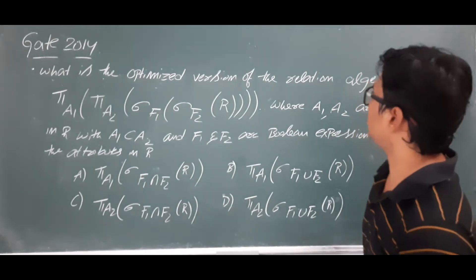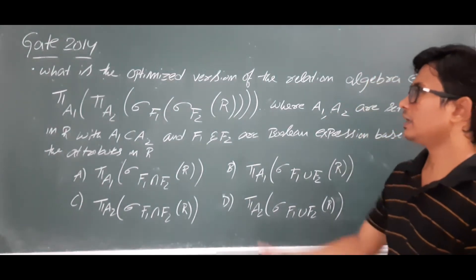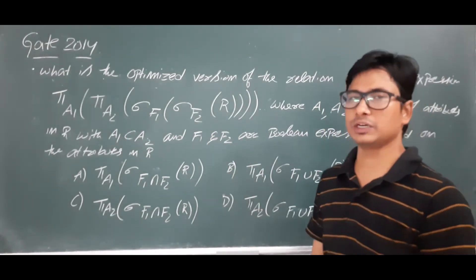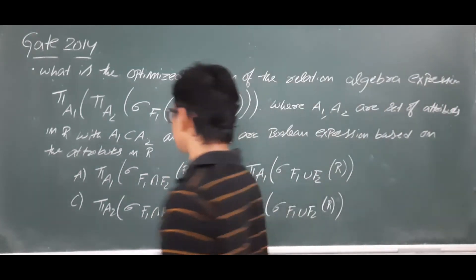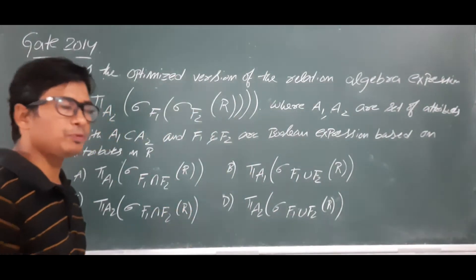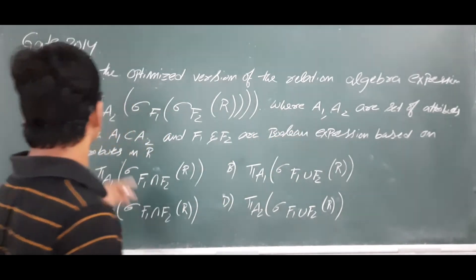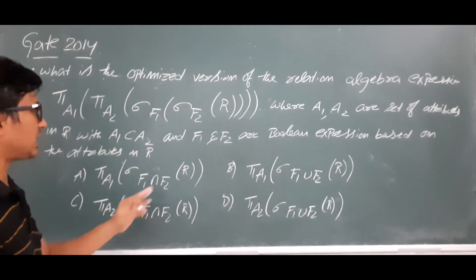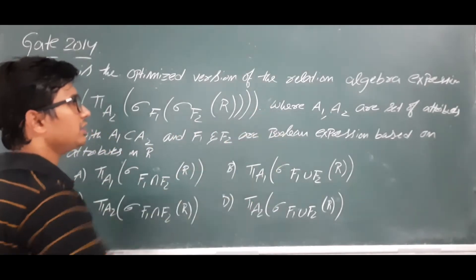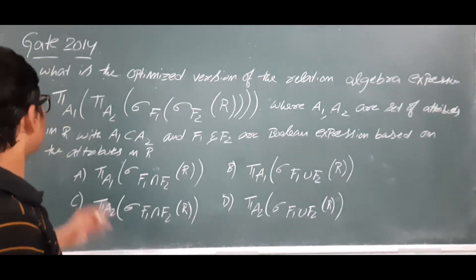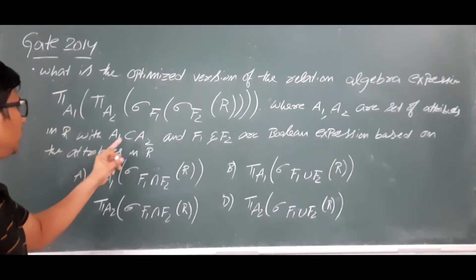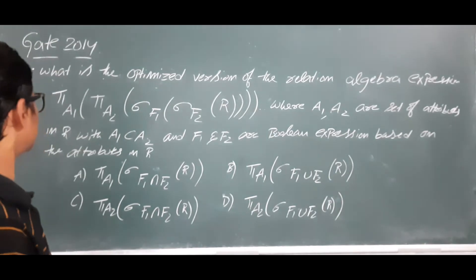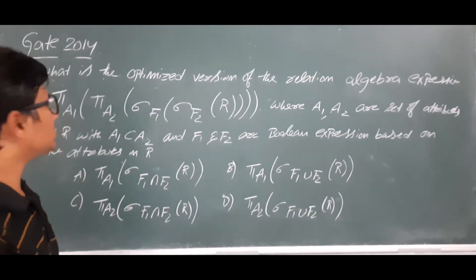What is the optimized version of the given relational algebra expression? They have given a relational algebra expression and are asking us to find the optimized expression. They have given a projection operator on a1 and a2, and selection operators on a relation r, where a1 and a2 are sets of attributes in relation r, with a1 being a subset of a2.